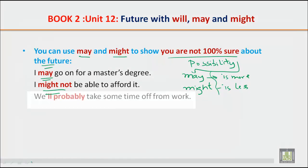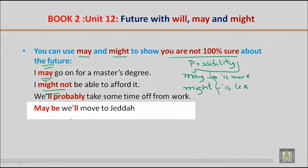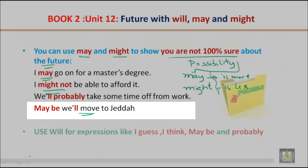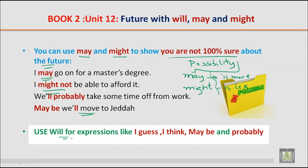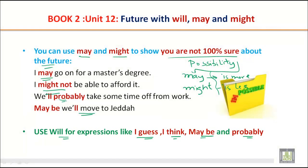'We will probably take some time off from work.' 'Maybe we will move in together.' These are further examples of expressing future possibility and likelihood.